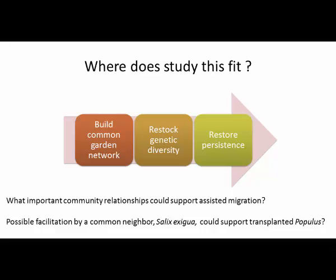So where does this study fit in? We're asking how we can buffer those newly transplanted species and help them establish initially before the climate changes. What important community relationships can we use to support assisted migration? Can we possibly use facilitation by a common neighbor, Salix exigua, to support the example of transplanted Populus fremontii? Salix exigua has been shown to be less sensitive to climate change, so it's a good candidate to possibly be used in support of assisted migration.